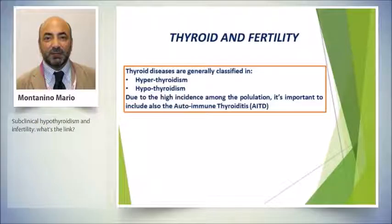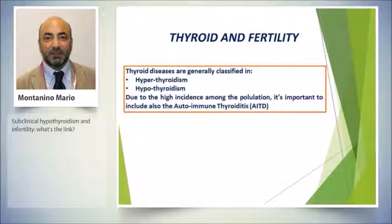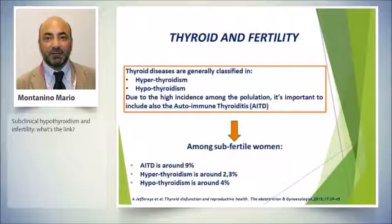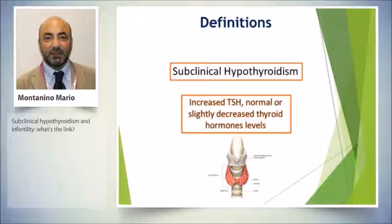The topic today is thyroid and infertility — an open question. Thyroid diseases are generally classified as hyperthyroidism and hypothyroidism. Due to the high incidence among the population, it is also important to include autoimmune thyroiditis. Among subfertile women, around four percent suffer from hypothyroidism. Subclinical hypothyroidism is defined as an increase of TSH with normal or slightly decreased thyroid hormone levels.